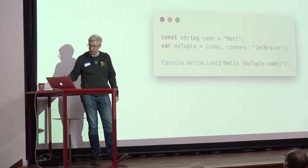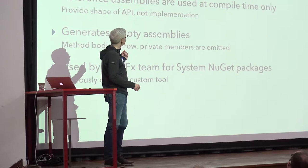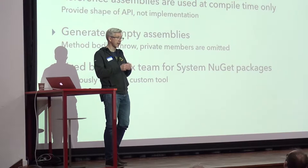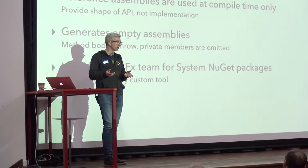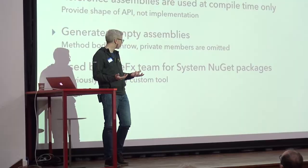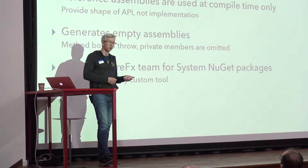Finally for 7.1, we've got reference assembly generation. You're probably not going to care about this one — it's mostly for people like the core framework who need to build NuGet packages with different implementations for different platforms, which can have different public APIs, but they want to give you one known good set of APIs for reference. A reference assembly has no implementation — all method bodies simply throw, private stuff is removed, and it's just used by the compiler as a reference. Previously they built these with a custom tool, but now the compiler does it.